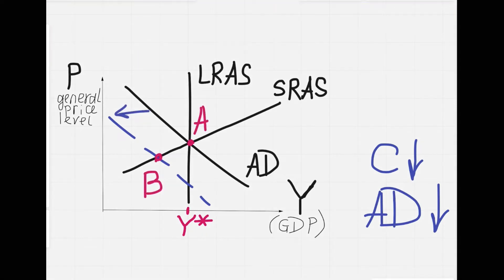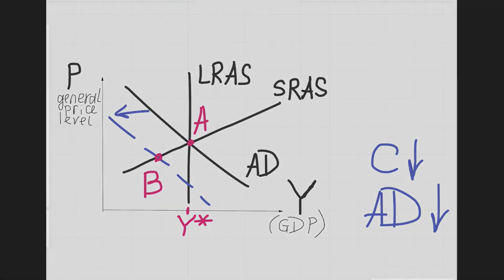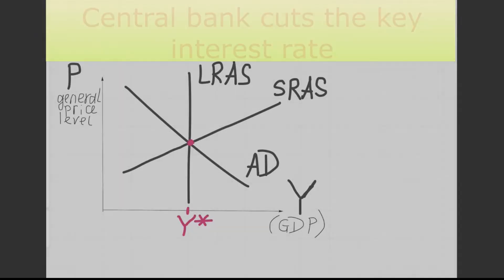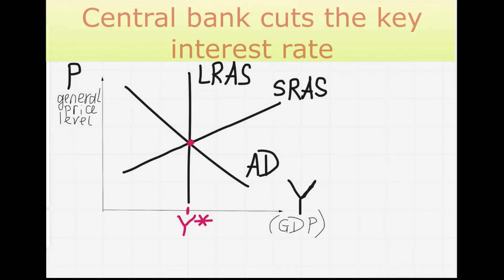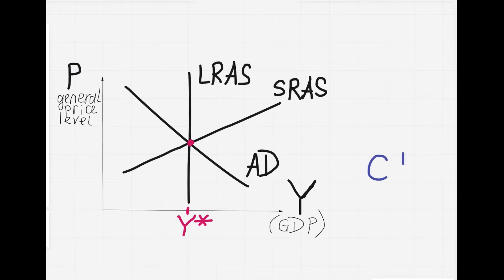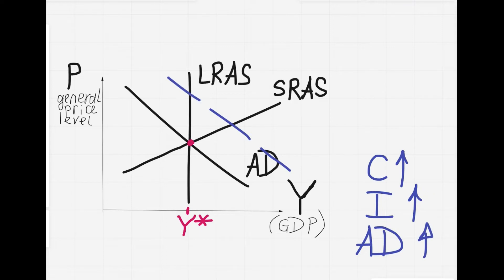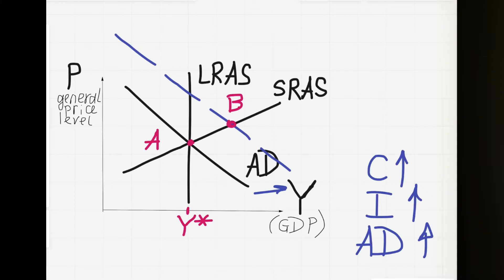The economy will move from point A to point B. Another example: the central bank cuts the key interest rate, which increases the money supply. People and businesses will have more money, so consumption and investments will go up, aggregate demand will go up, and the AD curve will shift to the right. The economy will move from point A to point B.